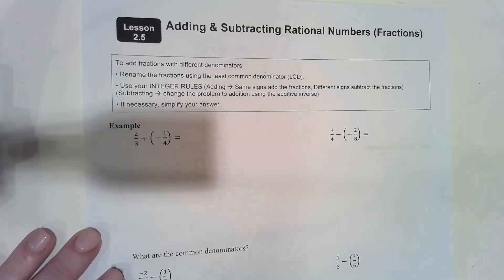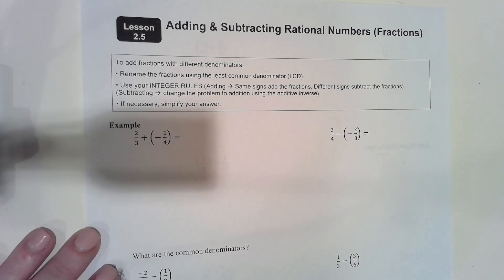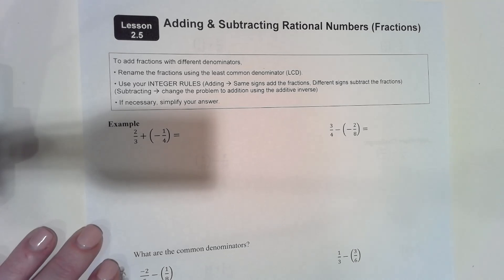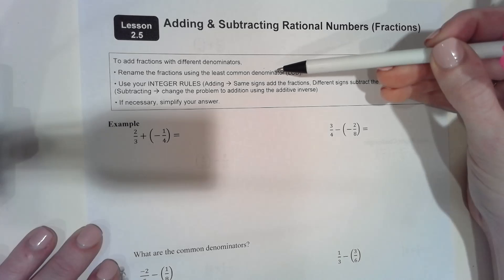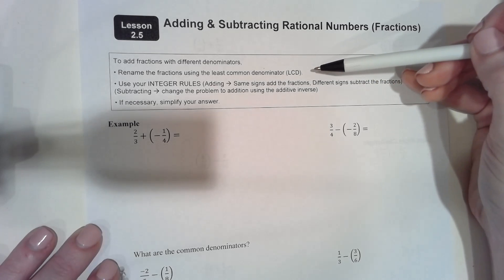Alright, hey guys. We're going to be doing adding and subtracting rational numbers — in this case, fractions. To add fractions with different denominators, the first thing we need to do is rename the fractions using the least common denominator.